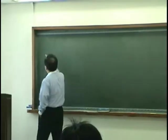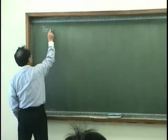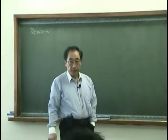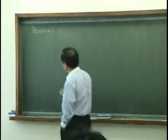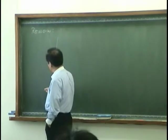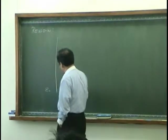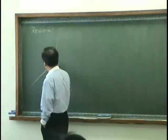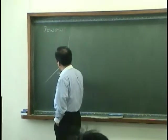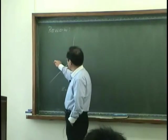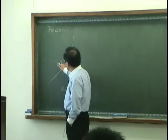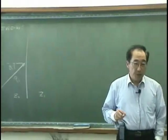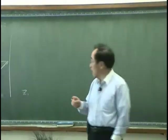Let's start today's lecture by reviewing what we learned in the last lecture. In the last lecture, when we have a medium that has characteristic impedance Z0 and Z1, and if we have an incident wave obliquely incident to the surface of discontinuity — discontinuity in terms of impedance, that is, an impedance mismatch.